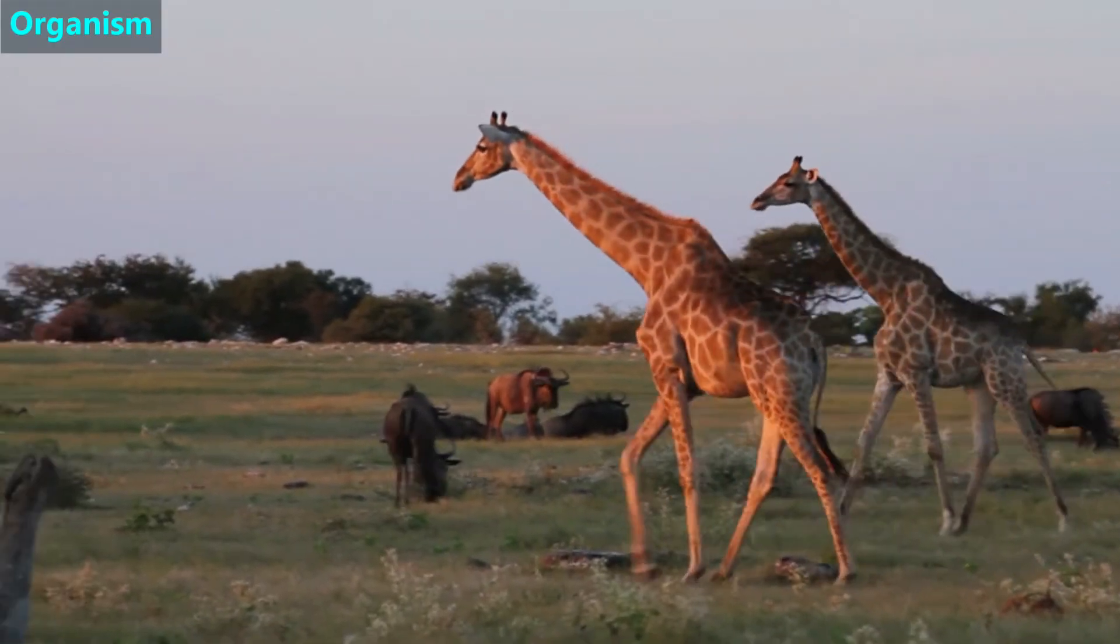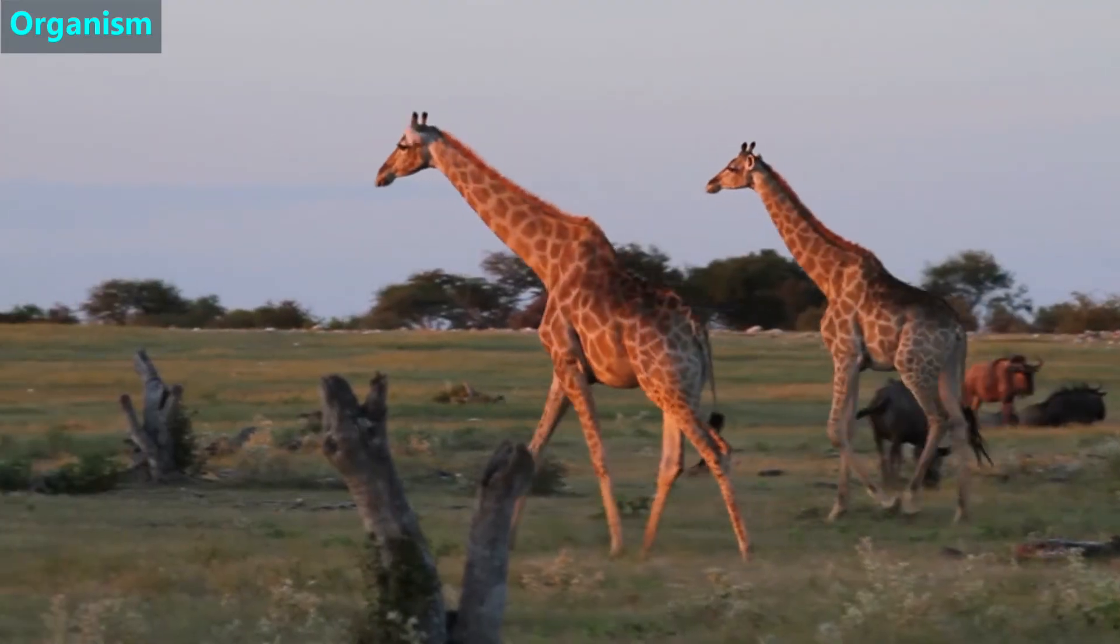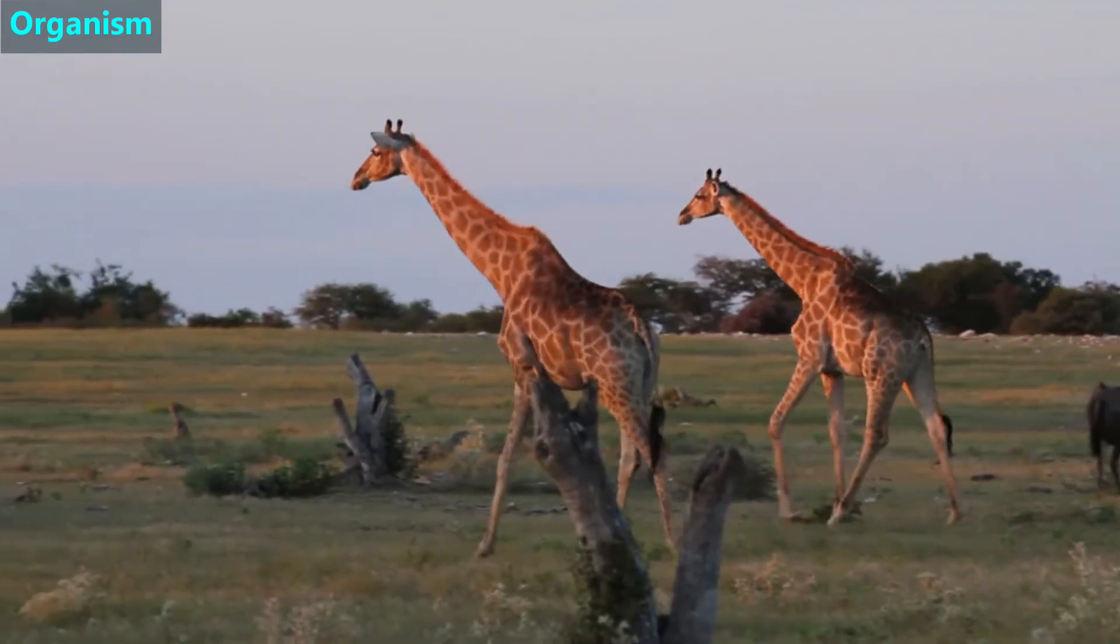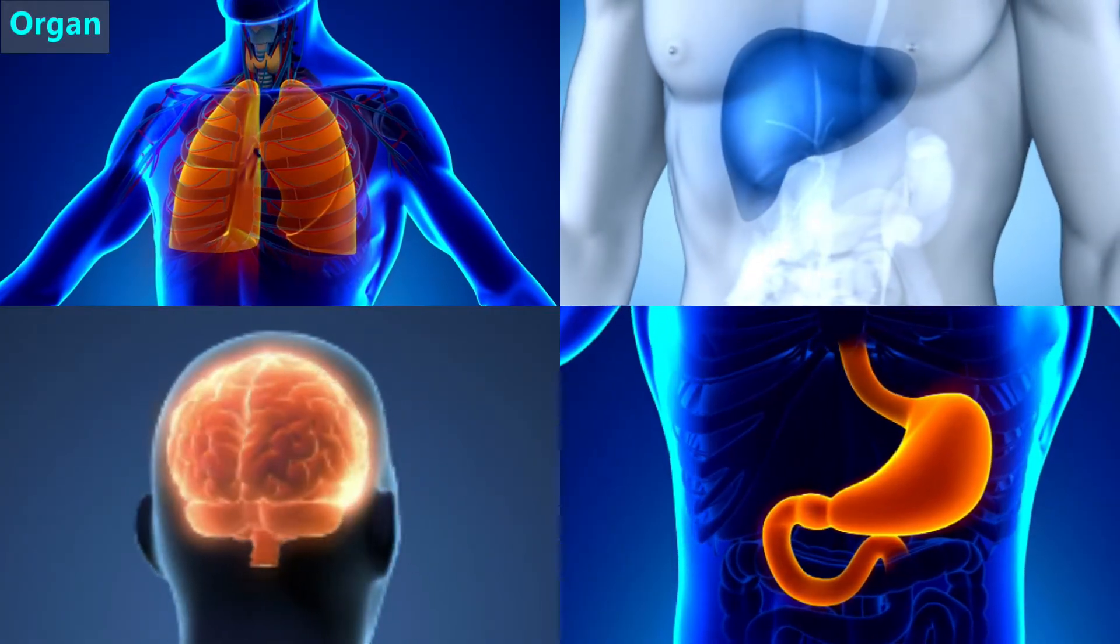Let's pause for a moment since the vocabulary can be confusing. An organism is an individual animal, plant, or single cell life form. For example, these are two organisms of the giraffe species. An organ is a group of similar cells that work together.